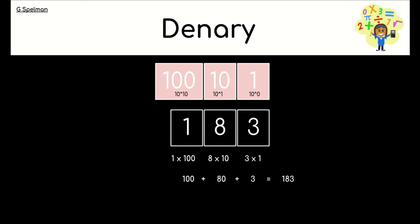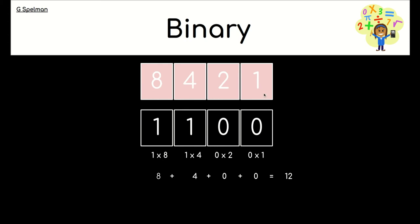We're going to look at the same thing for binary. Our column headings in binary start with 1 and 2, they're doubling: 4, 8. We will only have 1s and 0s because binary has only two digits, 0 and 1. So this number, 1100, would mean 1 eight, 1 four, no 2, and no 1. That means we're adding 8 plus 4, which gives us 12.